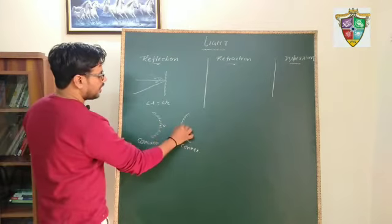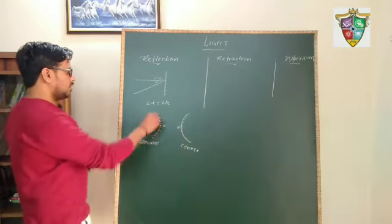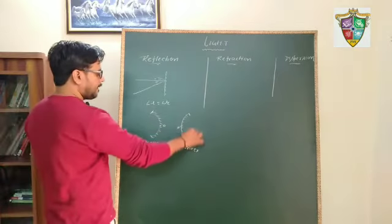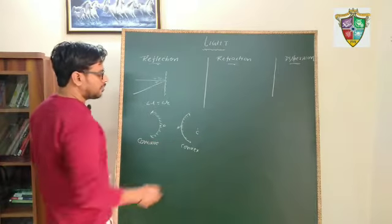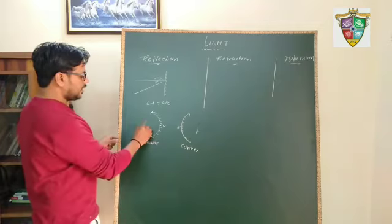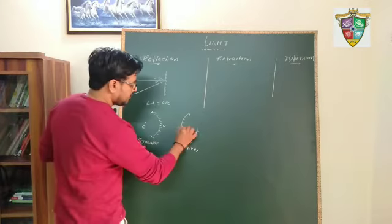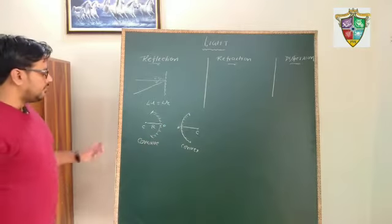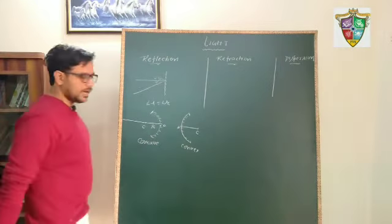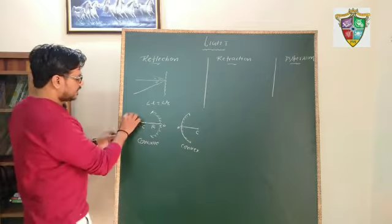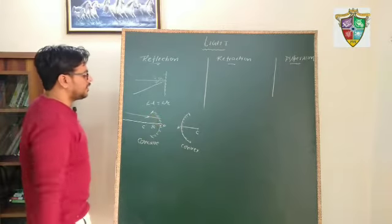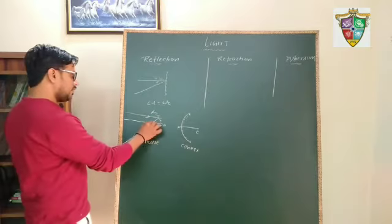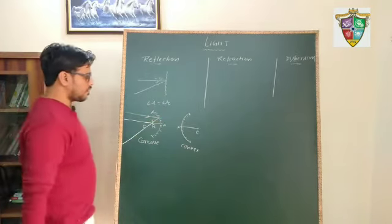This is the pole — the midpoint of the mirror is known as the pole. This portion is known as the aperture. The center of that sphere whose part the mirror is, is known as the center of curvature. This is known as the radius of curvature. If we extend this line, this is known as the principal axis. There is a rule that if all rays coming parallel to the principal axis after reflection pass through a point, that point is known as the principal focus.